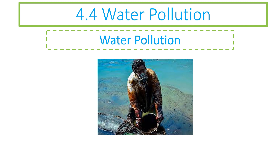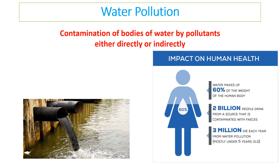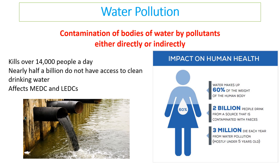Welcome to this ESS revision video on topic 4.4 and water pollution. Water pollution is the contamination of bodies of water by pollutants either directly or indirectly. Water pollution is a serious matter globally because it kills 14,000 people a day. We all rely so much on water — nearly half a billion people around the world still don't have access to clean drinking water.